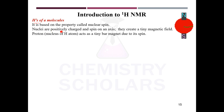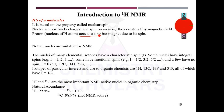Nuclei are positively charged species and they spin around the axis. Because of the spin, they create their own magnetic field — they act as a tiny magnet. Proton, being a positively charged hydrogen atom, acts as a nuclei and acts as a tiny bar magnet due to its spin. We are using this technique for finding out the number of hydrogen atoms in a molecule.